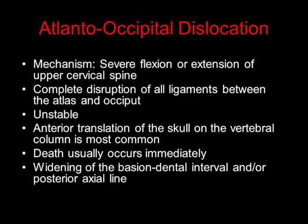Atlanto-occipital dislocation is caused by severe flexion or extension of the upper cervical spine. It results in complete disruption of all the ligaments between the atlas and the occiput. It is highly unstable. The anterior translation of the skull on the vertebral column is the most common pattern. Death usually occurs immediately, and there is usually widening of the basion-dental interval and/or the posterior axial line.